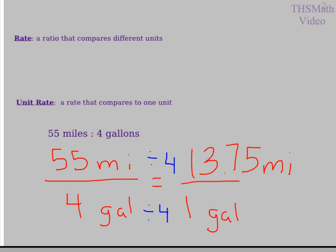And that is how far 1 gallon of gas was taking me. So again, I took my rate — 55 miles over 4 gallons — and I divided the numerator and denominator by 4, because that's the number in the denominator, and 4 divided by 4 gives me 1 in my denominator.